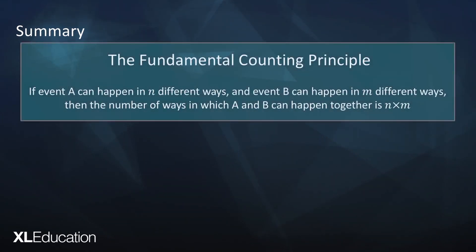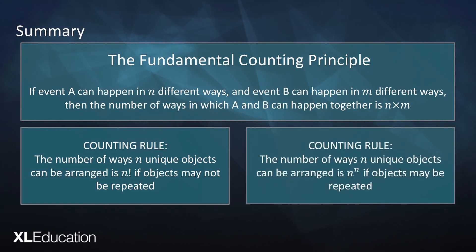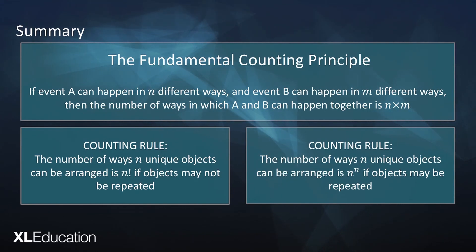In summary: the fundamental counting principle states that if event A can happen in n different ways and event B can happen in m different ways, then the number of ways A and B can happen together is n times m. The counting rule is: n unique objects can be arranged in n factorial ways if objects may not be repeated, or n to the power of n ways if objects may be repeated. Practice is key to understanding what you've just learned, so make sure to practice it.